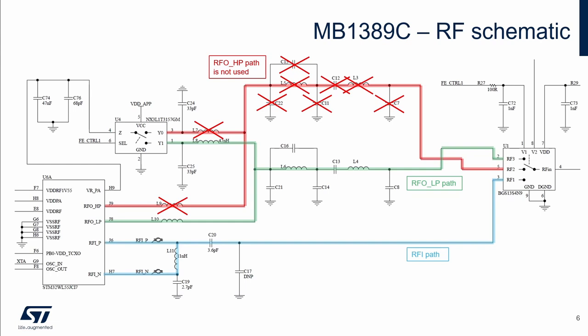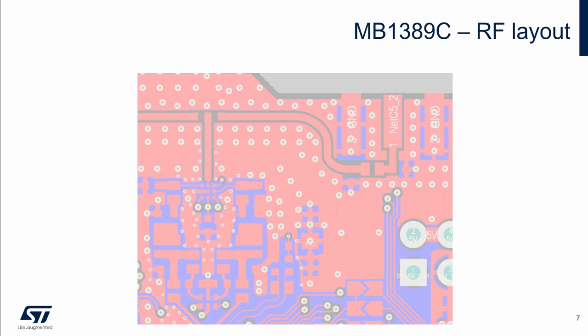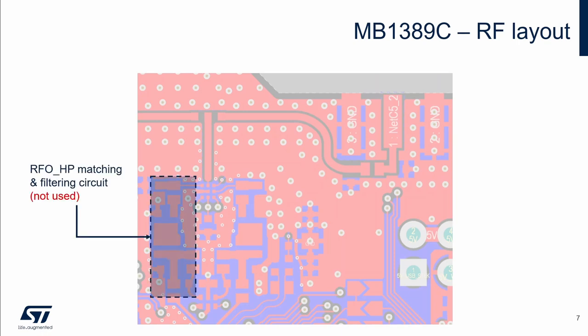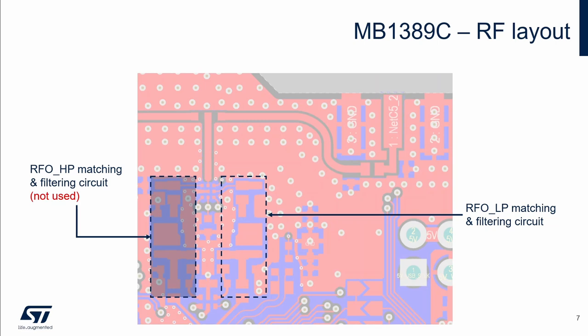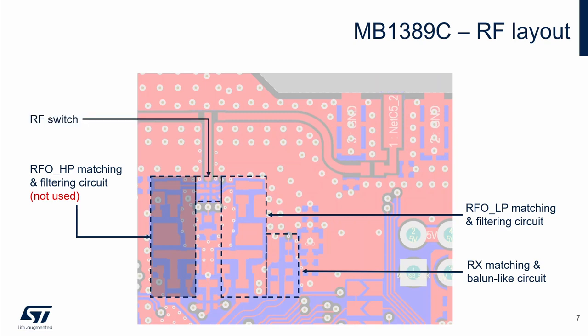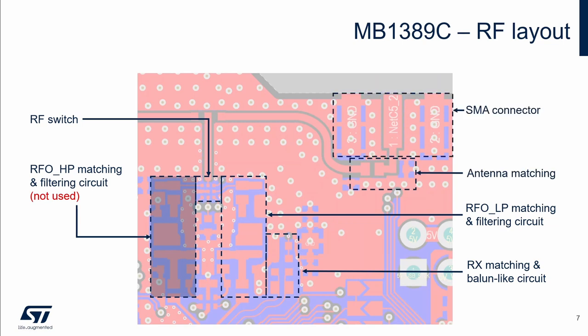The last RF path is the receiver path. The position of RF circuits on the PCB is as follows: the high power matching and filtering circuit — as mentioned, not used in this example — then the low power matching and filtering circuit, the receiver matching and balun circuit next to it, the RF switch between low and high power circuits, the antenna matching network, and finally the SMA connector.